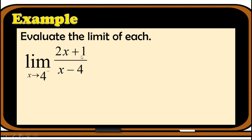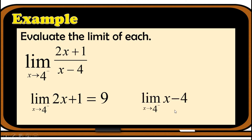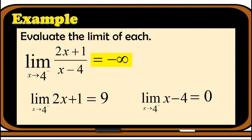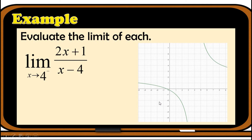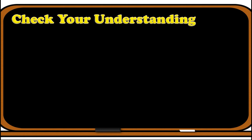Another example: find the limit of (2x plus 1) over (x minus 4) as x approaches 4 from the left. The limit of the numerator: 2 times 4 is 8 plus 1 equals 9 — positive. The limit of the denominator: 4 minus 4 equals 0. So the numerator is positive and we approach 4 from the left — positive divided by negative gives negative. Therefore the limit is negative infinity. The graph confirms — approaching 4 from the left, the graph moves downward continuously without bound.